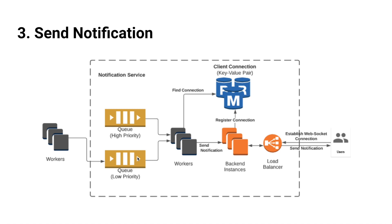Generally, notifications are sent out asynchronously and they have different priorities. In order to handle different sorts of notifications, there would be different queues for different priorities. Unless specified otherwise by the interviewer, we can treat our notification as low priority and publish it in the low priority queue. Once we publish the notification messages in the queue, there will be notification workers that subscribe to this queue, find the backend instance that has the open connection with the user, and forward the notification. Whenever there's a message, it will grab it and try to find the connection.